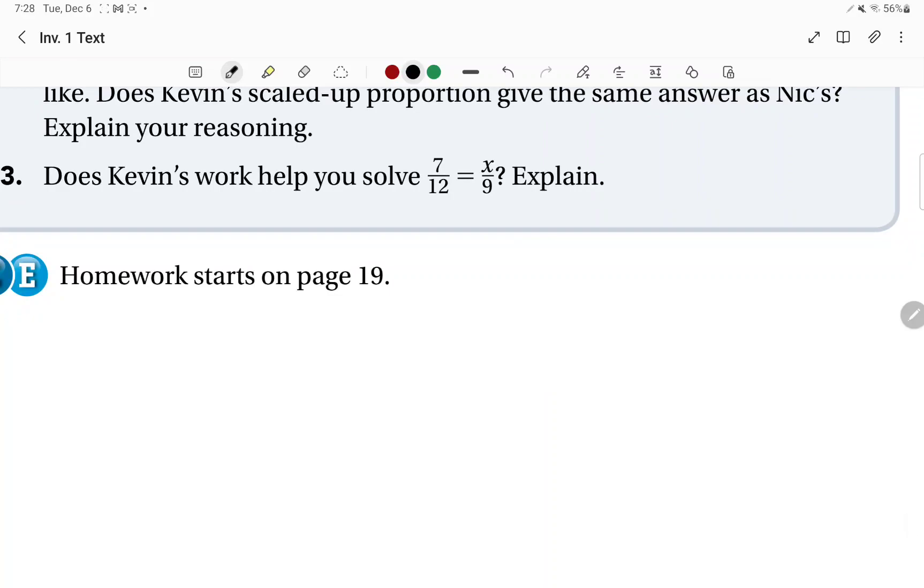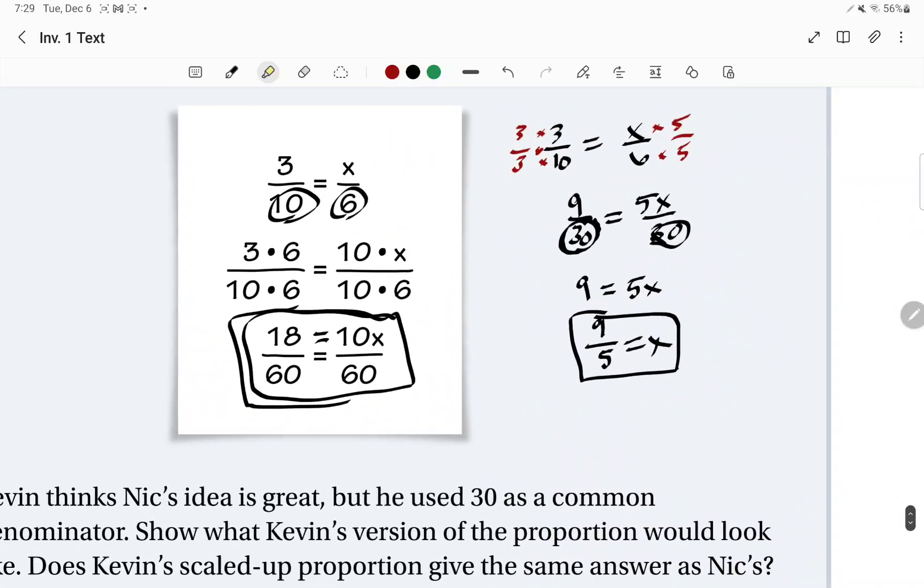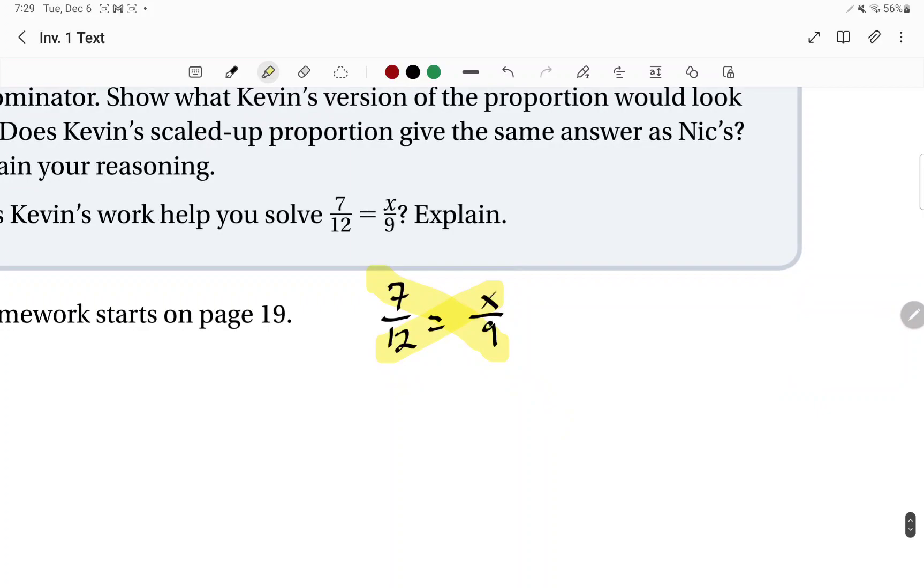All right, then does Kevin's work help you solve 7 twelfths is equal to x over 9? Now you could just cross multiply. So go ahead and copy this in your notes. Now you could just dumbly cross multiply. But the purpose for this is learning how characters interact with each other. How are they tied into things that we've learned in the past and other chapters and other books of this big old same story. So there's purpose to what we're doing. So I want you to try to do what we did up here. Just play around with it a bit. Have fun. What are the common denominators that I could change these to? Because you're looking at 12 and 9. So try this on your own and then come back to the video and check your answer.